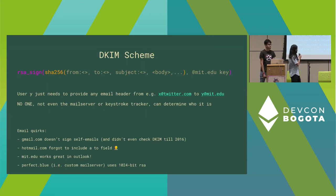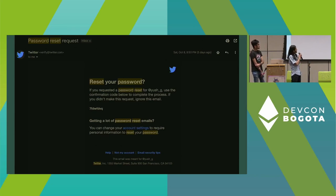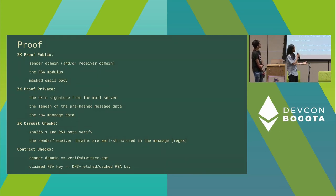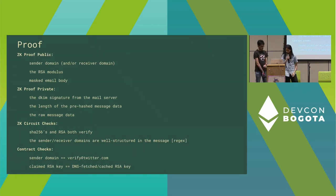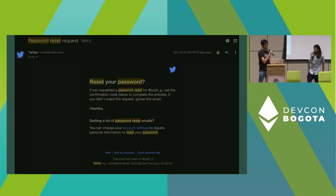There are some small email quirks — not everything works like this. Gmail didn't even do this until 2016, Hotmail doesn't include the to field, and mail servers have slightly different bit keys. The specific demo we have today is trustless Twitter verification on chain. You get a Twitter reset password email from twitter.com, we create a ZK proof of this email, and reveal only the sender domain, the RSA modulus from the DNS record of Twitter, and the masked email body — which in zero knowledge only exposes the specific keys we want to release, like the username.